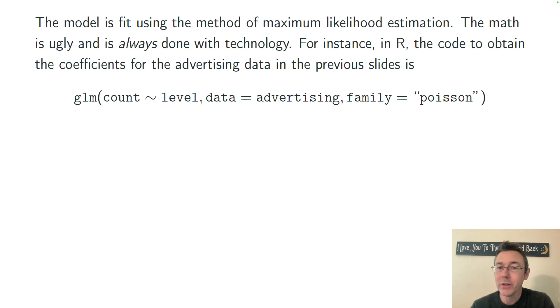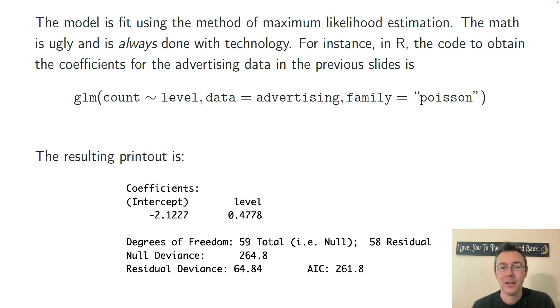And the resulting printout gives me coefficients of negative 2.12 and 0.478 respectively. There's also some information about deviance. I'm not going to go into R in this video. Suffice it to say that if you want more information, you save this model as a variable and then run a summary command on it, or there's different commands you can use using the broom package. All stuff I will cover to come.